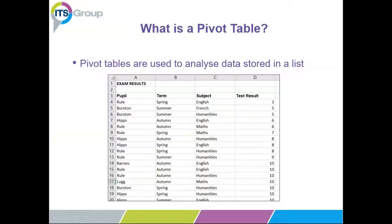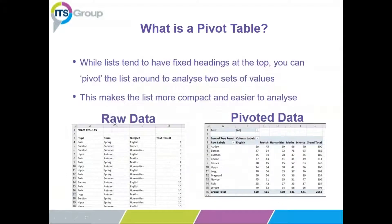With normal data lists you have headings across the top of your spreadsheet and all the data underneath. With pivot tables you can have headings both across the top and down the left-hand side. The raw data — one big list with headings across the top — is pivoted around so we have headings across the top and down the side. In the middle we have an analysis of the values, with grand totals on the outside, and this is a much more compact view than the original raw data.